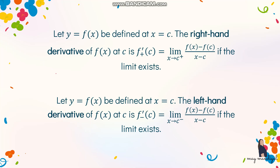f prime of c exists at a given value of c if the right hand derivative is equal to the left hand derivative. If these two values are equal, we can say that our function is differentiable because f prime of c at that value exists.